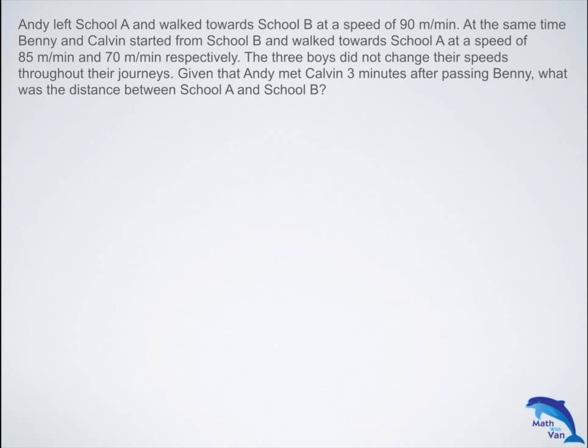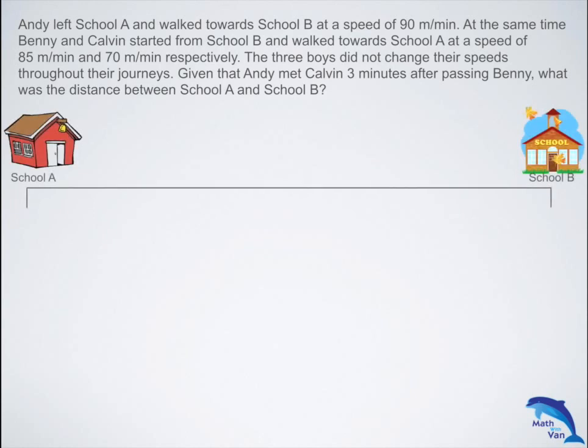So we start off by redrawing the distance line to visualize the problem, and of course I can use animations to further enhance the understanding here. So school A and school B: Andy at 90 meters per minute, Benny at 85 meters per minute, Calvin at 70 meters per minute.